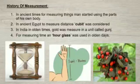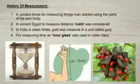Let's know the history of measurement. When man felt the need to measure things, he started by using the parts of his own body for the purpose. In ancient Egypt, the distance from a man's elbow to the tip of his middle finger was called a cubit. This measure would differ from person to person. Therefore, the cubit of the king was considered as the standard. In olden times, gold was weighed in a unit called a gun, and an hourglass was used for measuring time.